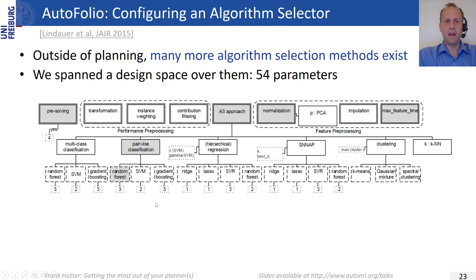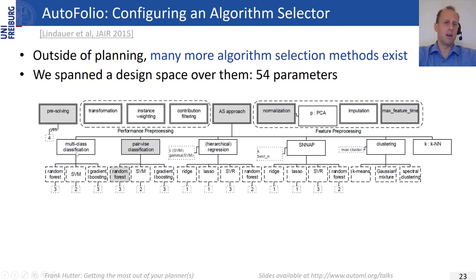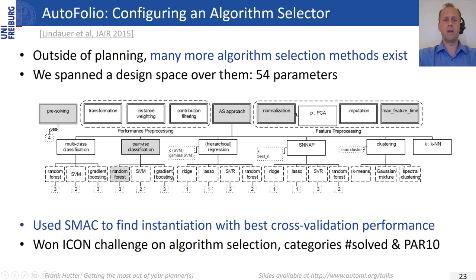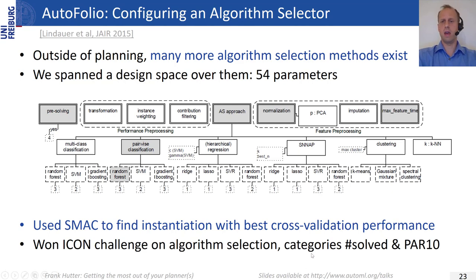Outside planning, there is extensive work on algorithm selection. In 2015, we collected a design space of many different algorithm selection techniques — multi-class classification, pairwise and cost-based classification, hierarchical regression, nearest neighbor, and clustering — plus all their hyperparameters, and used SMAC to find the best instantiation. In the ICON challenge on algorithm selection across many problem areas, our AutoFolio approach won in number of solved problems and penalized average runtime.